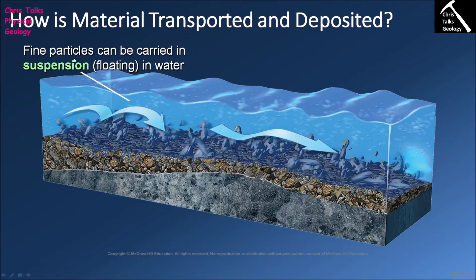The first way a river can move sediment within the water is in suspension — this is when very small clasts are held in suspension in the river water. This process can only really apply to the lightest clast sizes, so that's going to be clays and silts. Typically, anything which is a sand or larger cannot be held in suspension in the river — it's just too heavy.